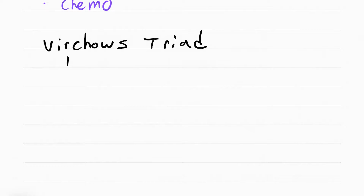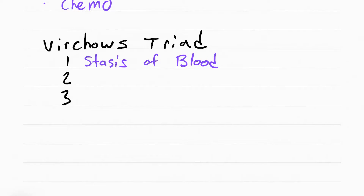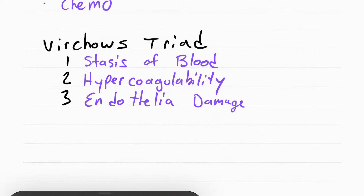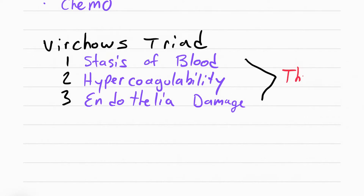Now these risk factors are actually called Virchow's triad. That includes stasis of the blood — so the blood doesn't move as well — hypercoagulability — so the blood is thick and it can clot easily — and endothelial damage, which causes the platelets to trigger and get stuck to each other. These three things are what leads to a clot or a thrombus.